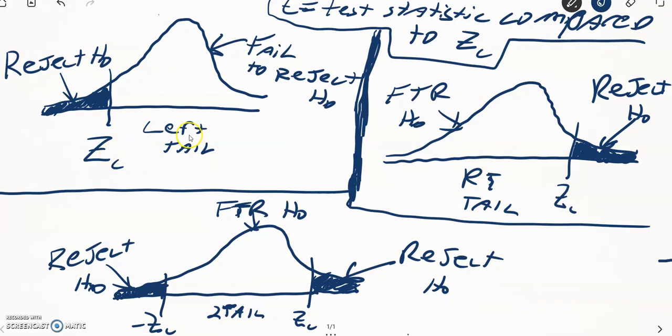For a left tail test, we have a z-critical value and we also have a test statistic. You're going to have both of these calculated on your spreadsheets when you put the information in.